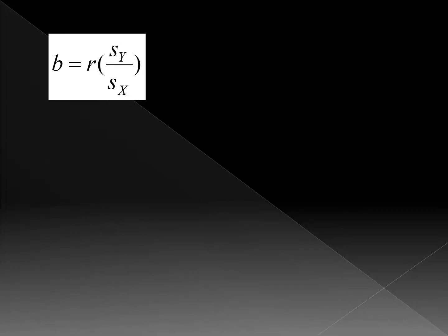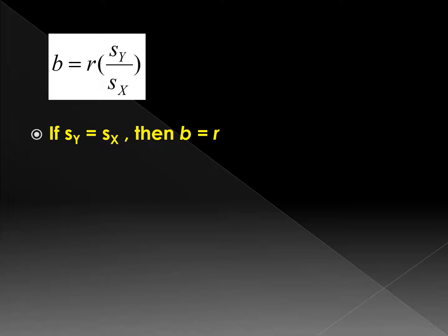Now we know there is an inner connection between the regression coefficient and the correlation coefficient. If the standard deviation of y equals the standard deviation of x, then B will equal R.